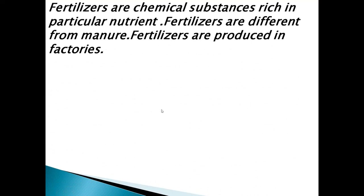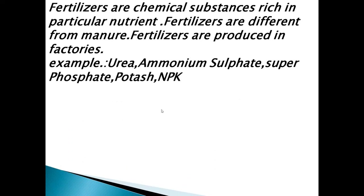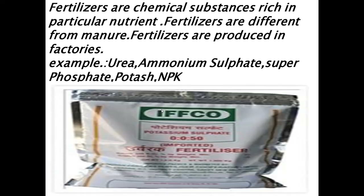Fertilizers are chemical substances that are rich in particular nutrients. Fertilizers are different from manure — they are produced in factories. Examples of fertilizers are urea, ammonium sulfate, super phosphate, potash, and NPK.